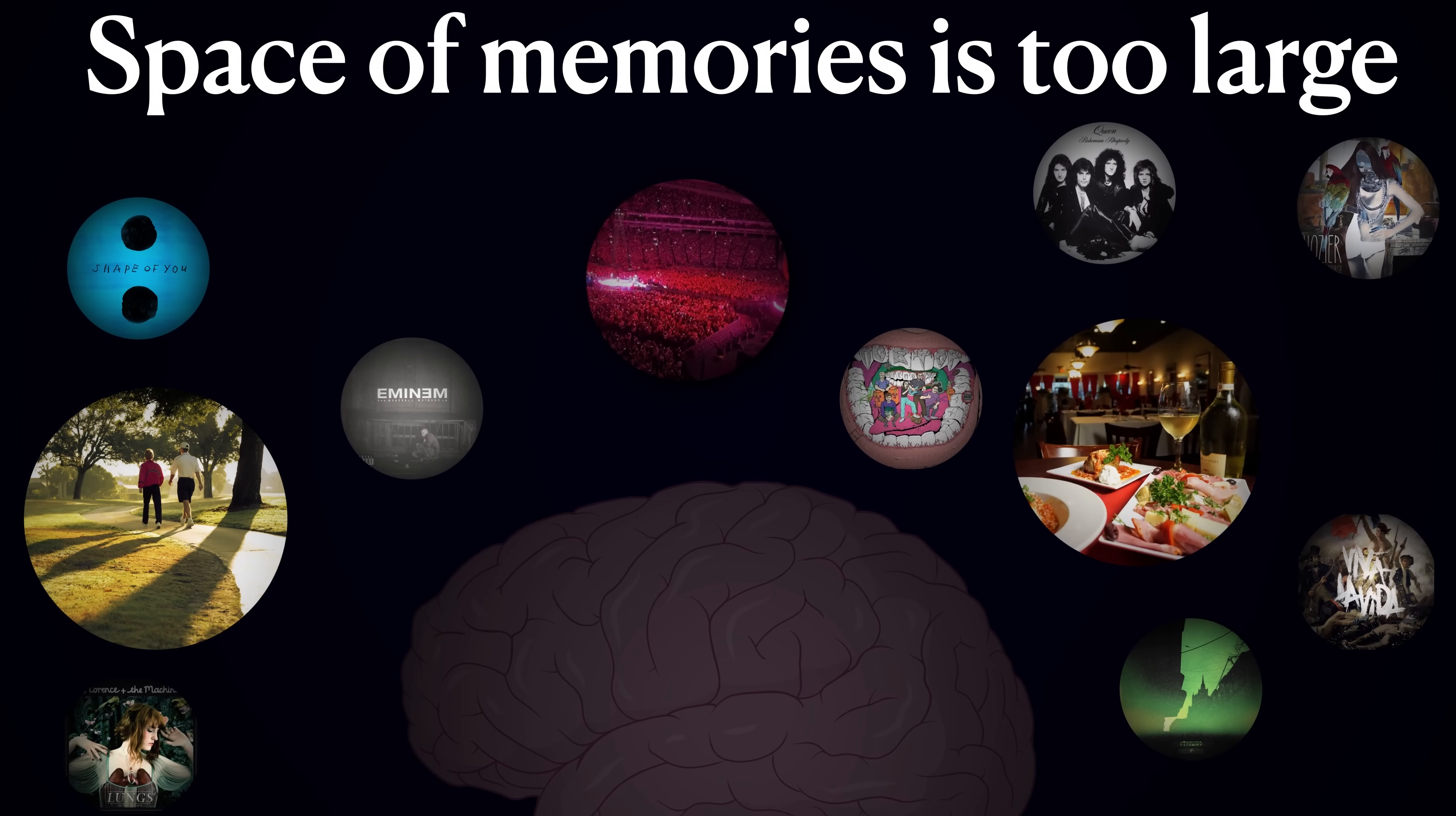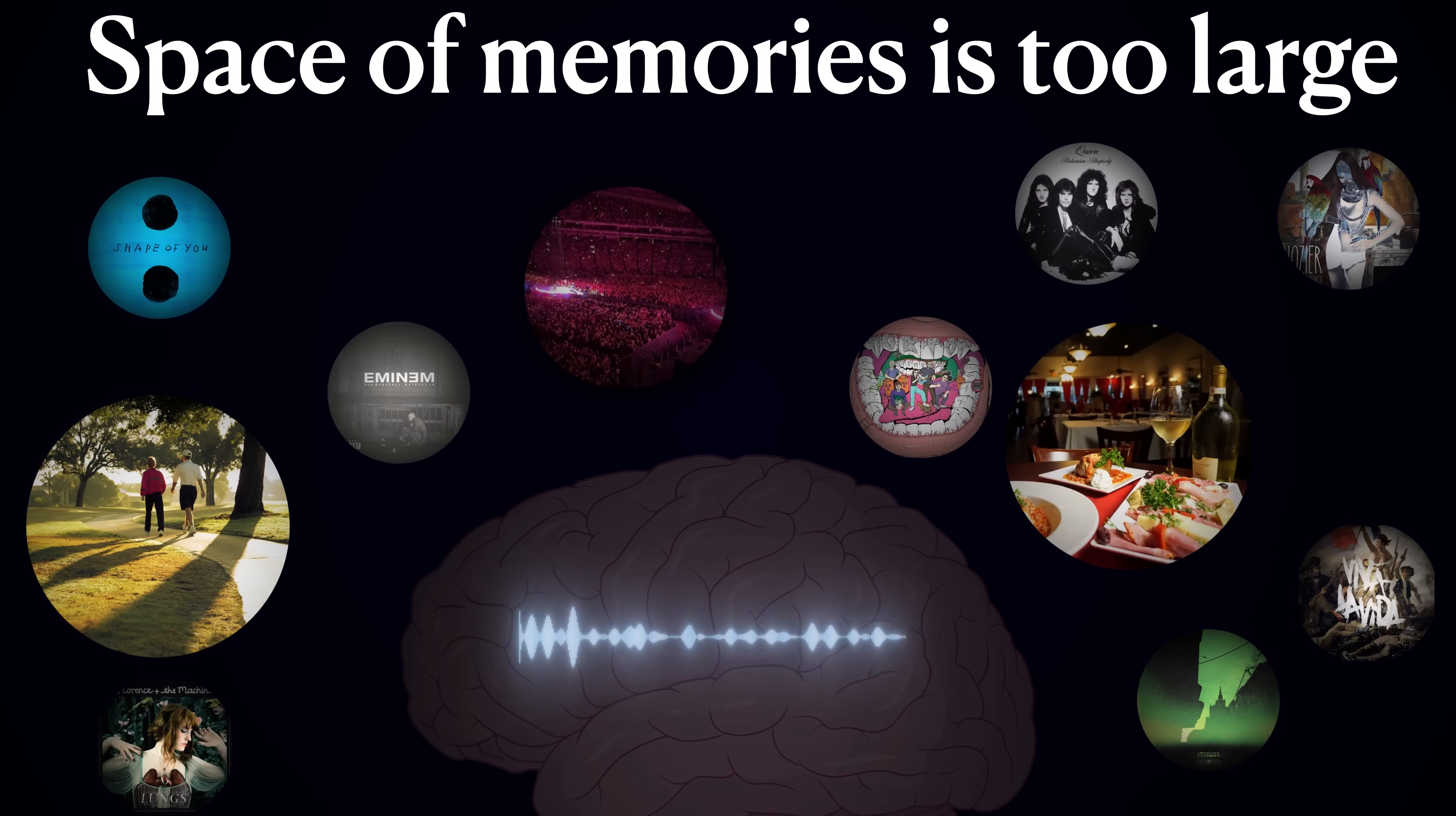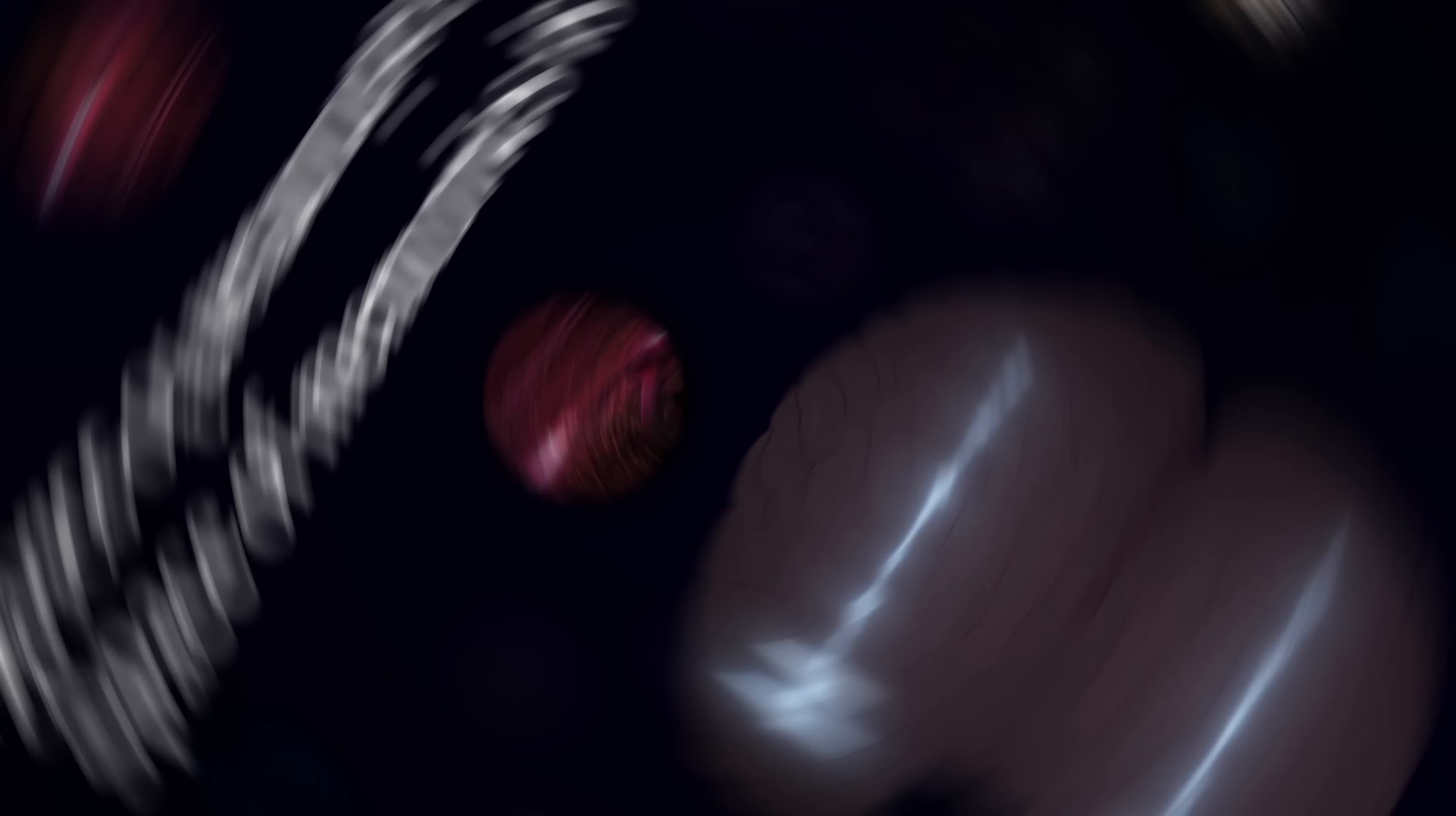Performing an exhaustive search would be simply impossible. Yet, you seem to have no problem instantly recognizing familiar stimuli and finding associations between them. So, how does the brain accomplish this so quickly?